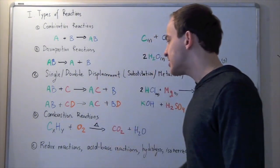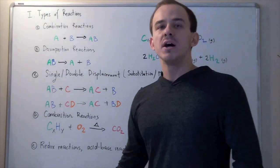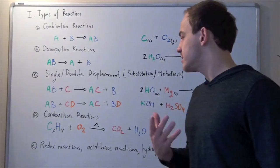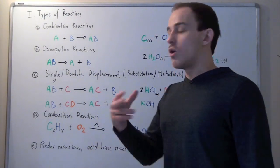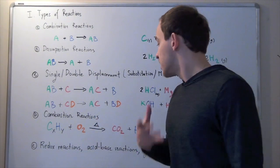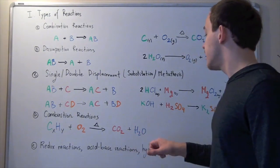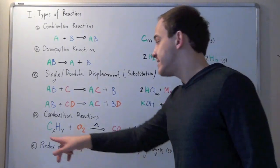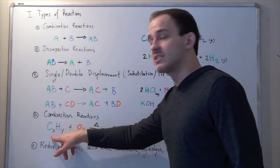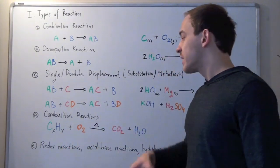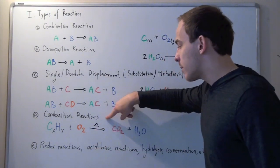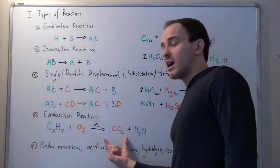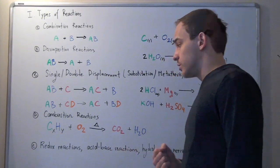The last type of reaction we'll look at is combustion. In combustion reactions, hydrocarbons are burned in the presence of diatomic oxygen gas to form carbon dioxide and water molecules. A common example is the burning of methane, CH₄, where X is 1 and Y is 4, in the presence of oxygen and heat — remember, the triangle symbolizes heat — to form carbon dioxide and water.